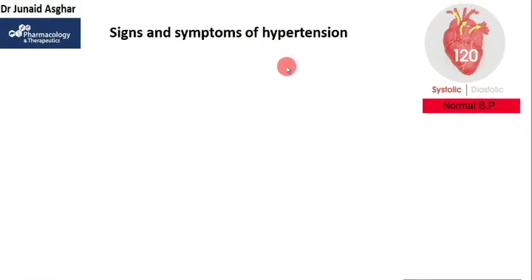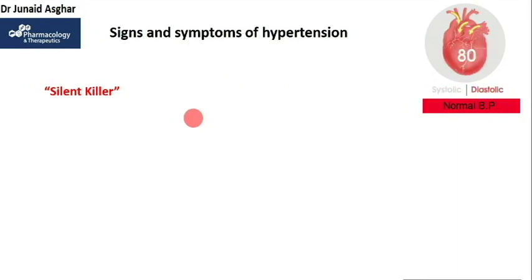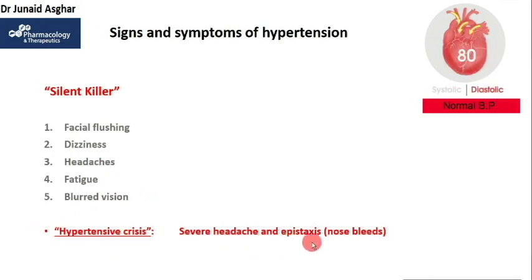High blood pressure or hypertension is often regarded as a symptomless silent killer. If you ignore it because you think certain signs will alert you, you are taking a dangerous chance with your life. Some signs and symptoms that may be present include facial flushing, dizziness, headaches, fatigue, and blurred vision. In more severe cases it may cause headache and epistaxis — nosebleed — and this can happen during a hypertensive crisis when blood pressure shoots to 180 over 120 mmHg.